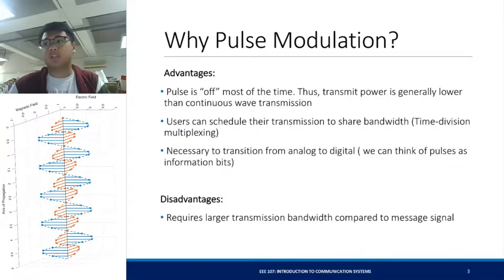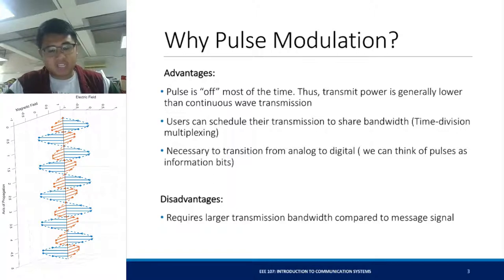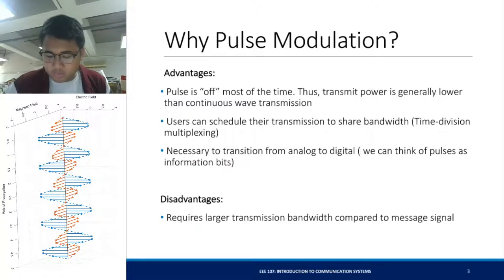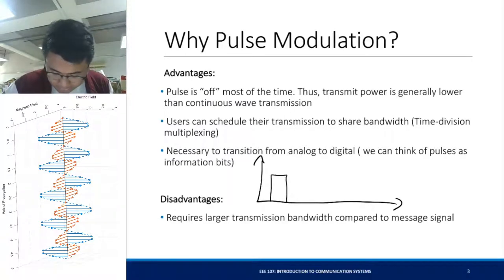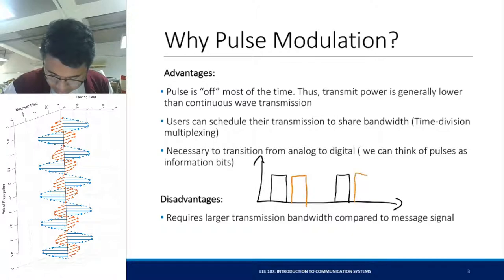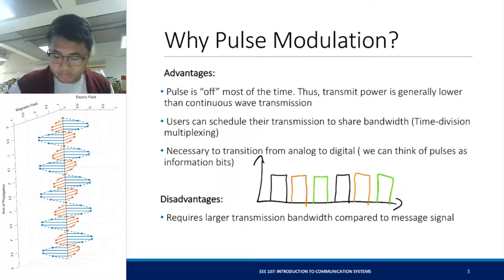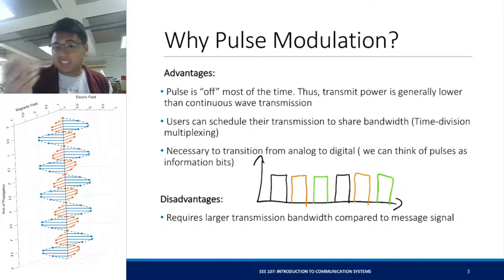So why do we use pulse modulation? The good thing about pulses is that it's off most of the time. Thus, your transmit power is generally lower than that of your continuous wave transmission. Users can schedule when they can transmit, so if you transmit every T_S, other users can use the channel and insert their own transmissions such that you won't be overlapping with different users. This is one advantage of pulse modulation schemes and represents the necessary transition from analog to digital modulation.